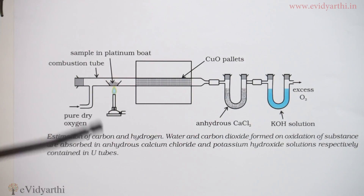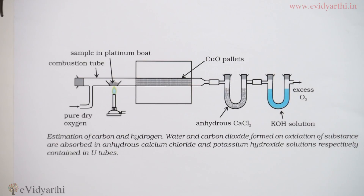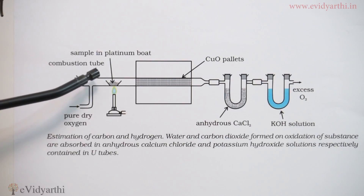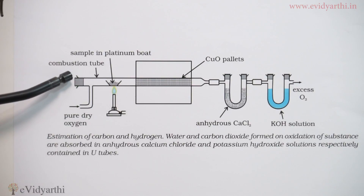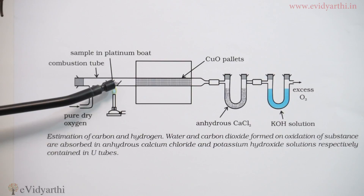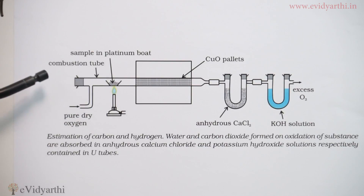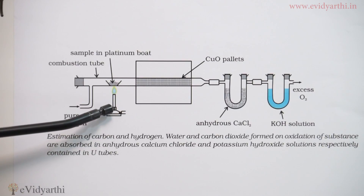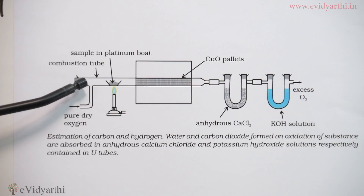You can now see the full image of the apparatus for the estimation of carbon and hydrogen. The organic compound sample is heated with excess dry copper oxide in the presence of dry oxygen or air which is free from carbon dioxide. From this pump, I am getting pure dry oxygen. This is the combustion tube — pure dry oxygen is passed through this combustion tube. The organic compound sample is placed on a platinum board inside the combustion tube.